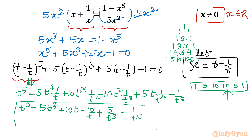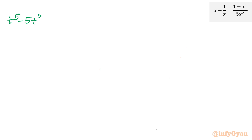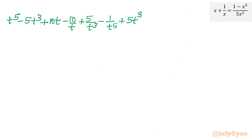Writing the full left-hand side after substitution: t⁵ minus 5t³ plus 10t minus 10/t plus 5/t³ minus 1/t⁵, then plus 5 times the cubic expansion giving 5t³ minus 5/t³ minus 15t plus 15/t, and then plus 5t minus 5/t, minus 1 equals 0.